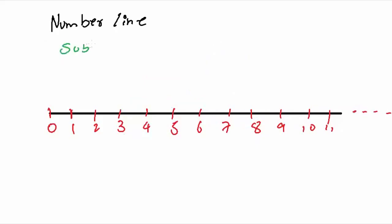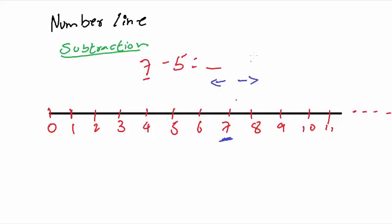Now let us perform subtraction on the number line. Take 7 minus 5 as an example. The method is similar: first find where 7 lies on the number line. In addition, you moved in one direction, but for subtraction you go in the opposite direction. So from 7, subtract 5 unit places: 1, 2, 3, 4, 5. The answer you land on is 2. So 7 minus 5 is 2.